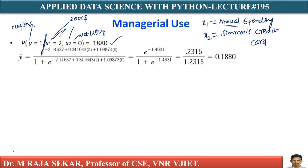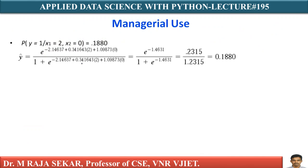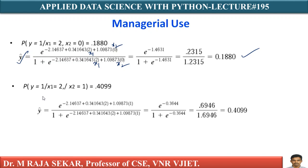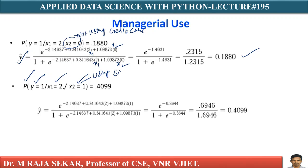The result is 0.1880. I already explained this equation in my previous lecture. By substituting X1 equal to 2 and X2 equal to 0 into the logistic regression equation, we get 0.1880. Now comparing: X2 equal to 1 means using Simmons credit card, and substituting gives 0.4099. A person having the credit card has more probability of using the coupon. The only difference between these two cases is whether the customer is using Simmons credit card or not.